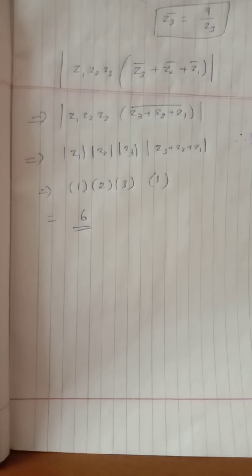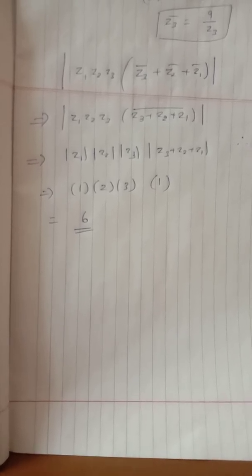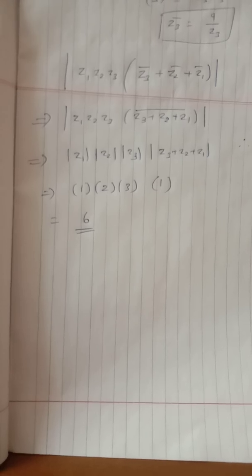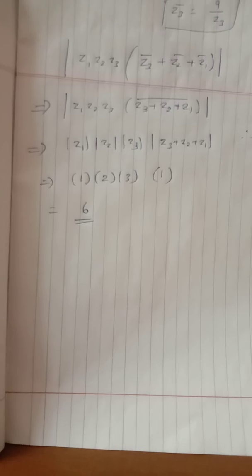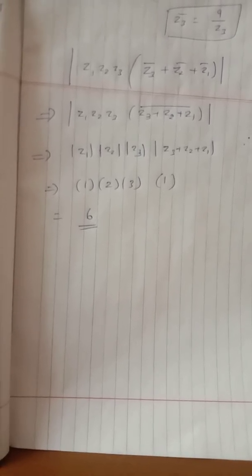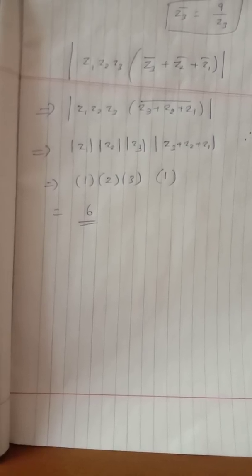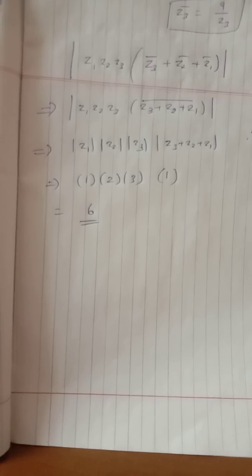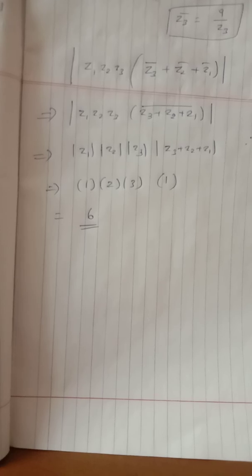Modulus of Z3 plus Z2 plus Z1. Since modulus of Z1 is 1, modulus of Z2 is 2, modulus of Z3 is 3, and modulus of Z1 plus Z2 plus Z3 equals 1, we get 1 times 2 times 3 times 1 equals 6. Therefore LHS equals RHS.